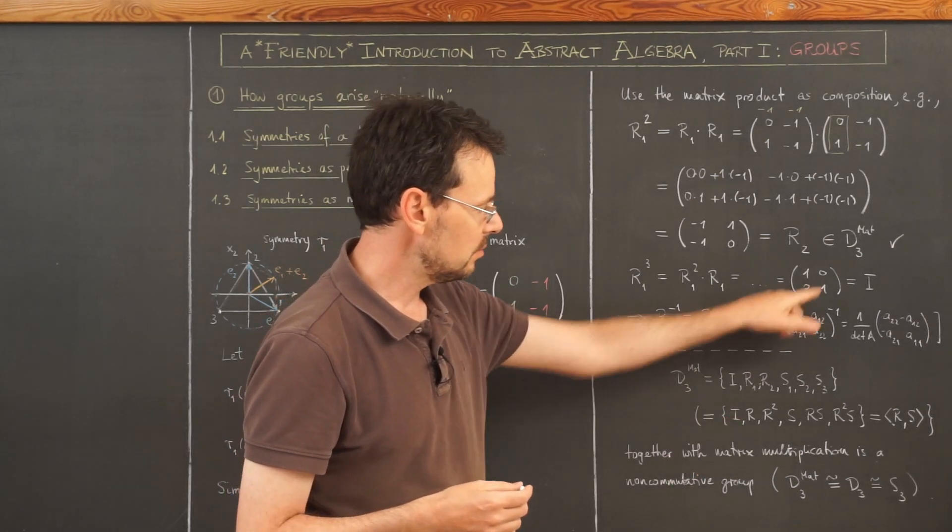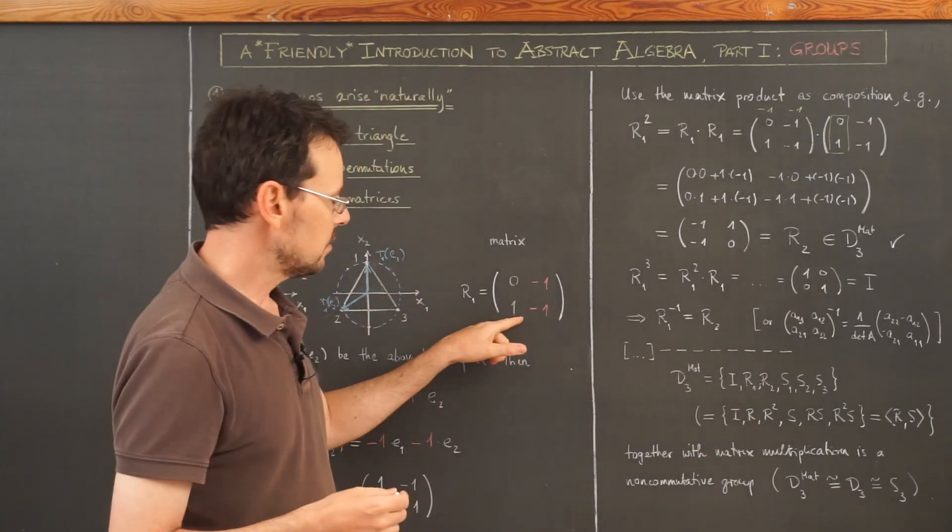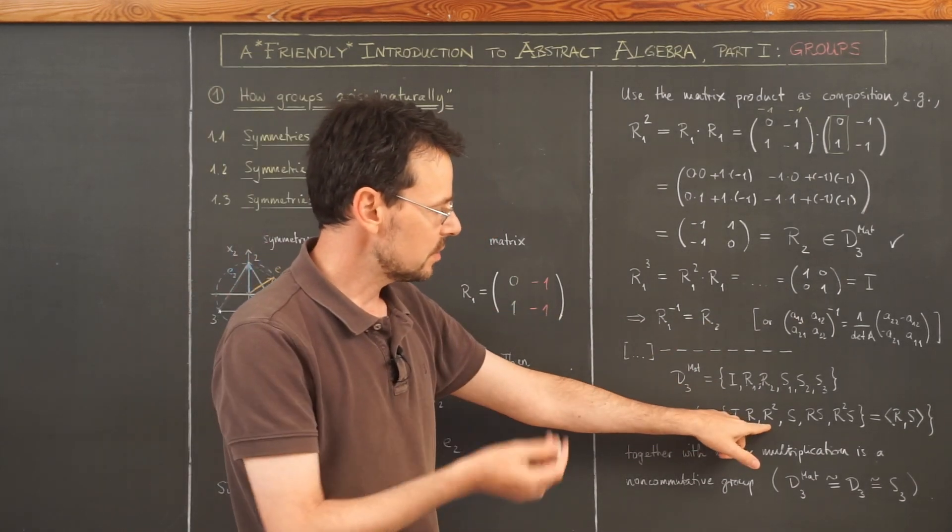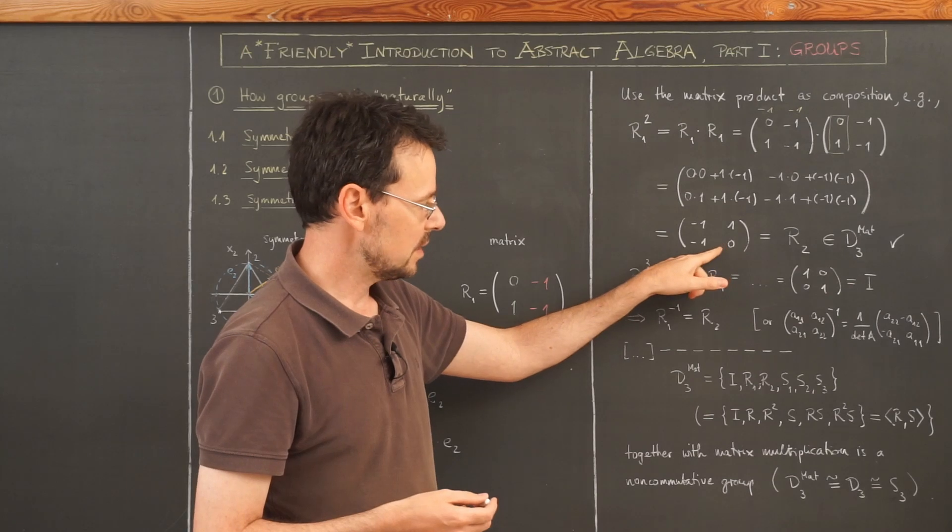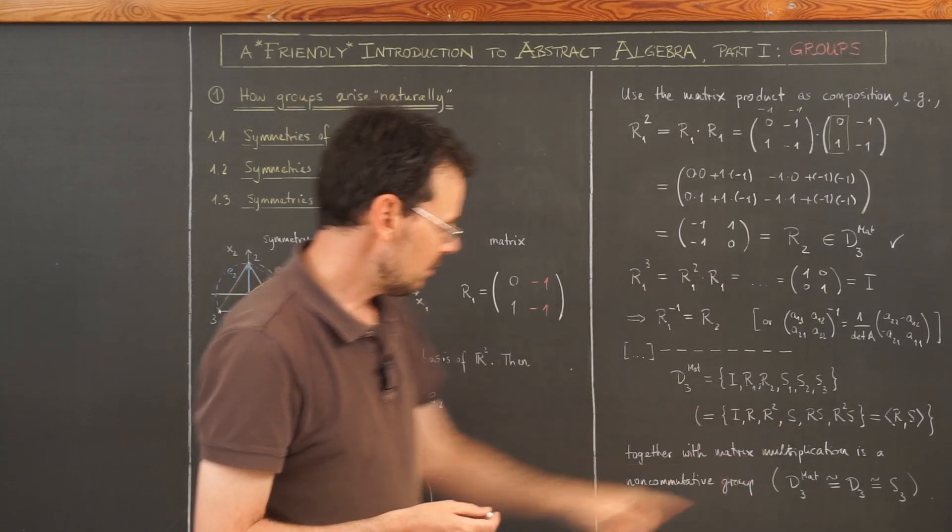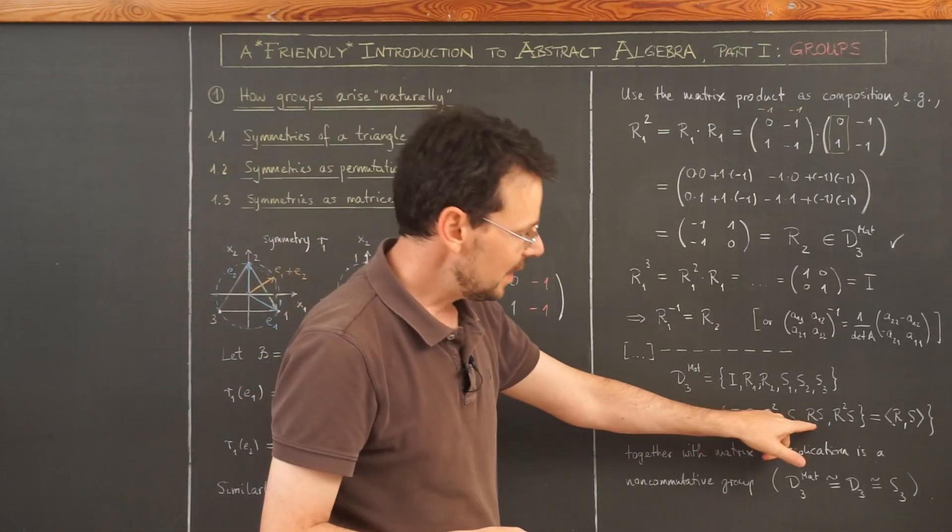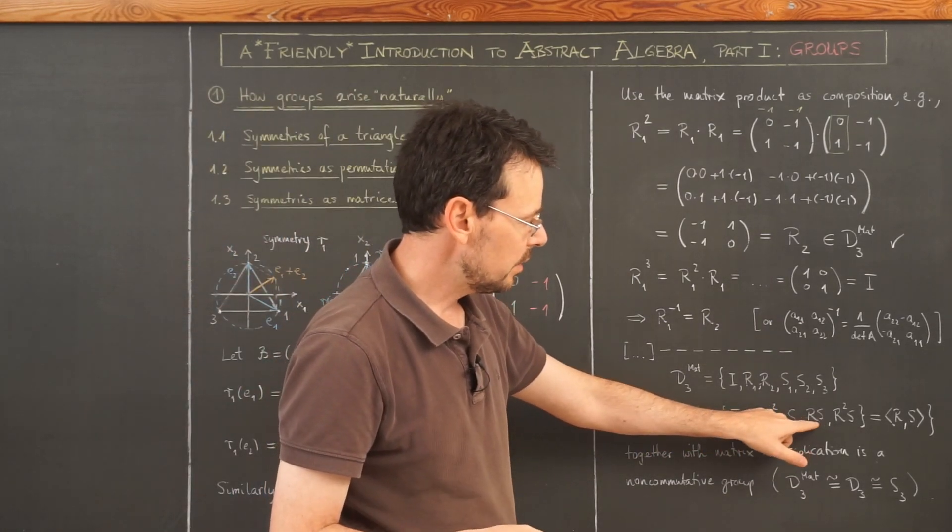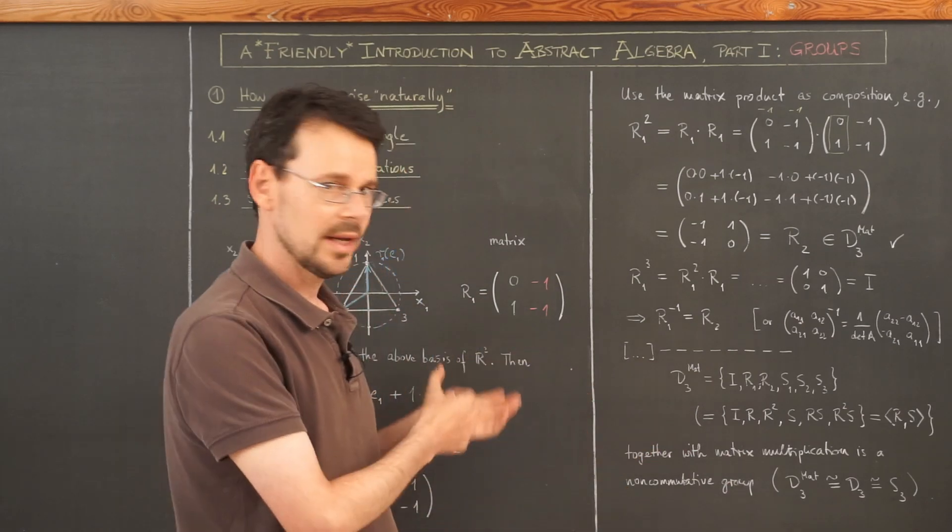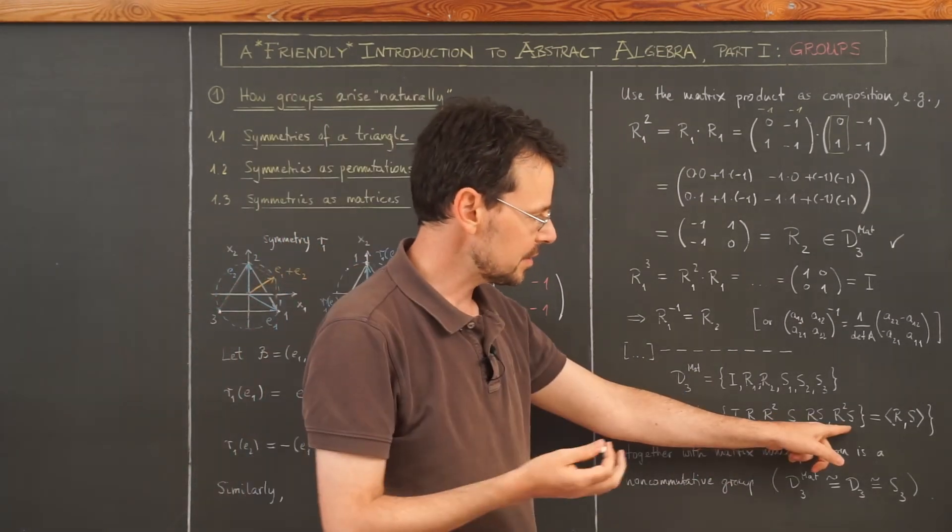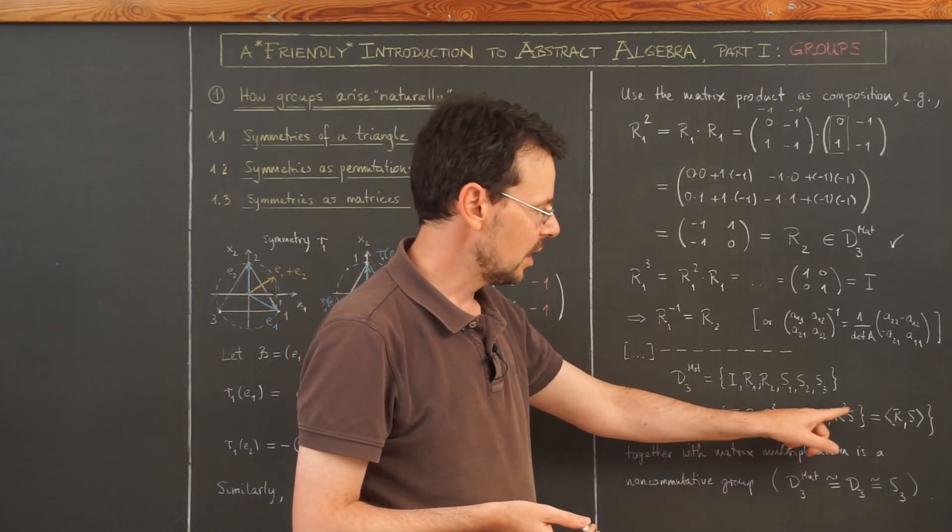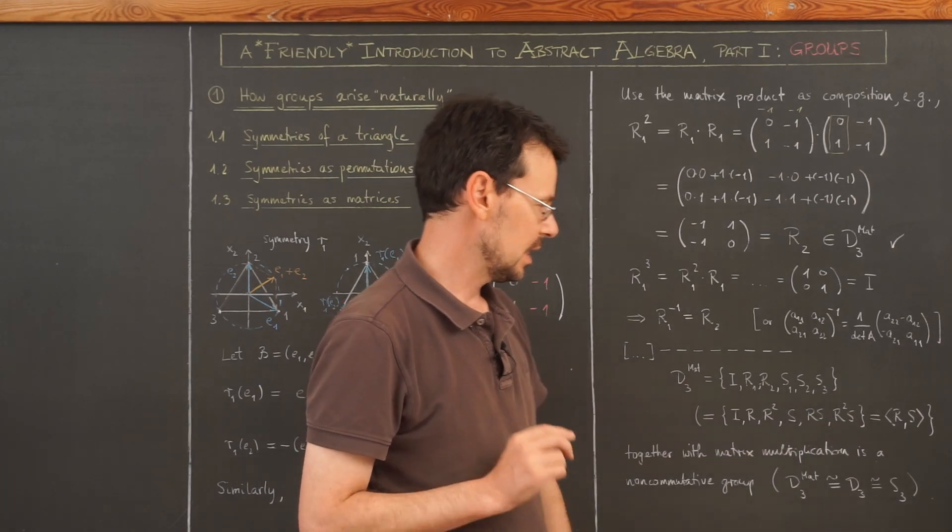So we have the identity matrix, we have this matrix, then we have the square of this matrix as we've seen here. Then we have a reflection, any reflection, you can take this if you want. Then we have the product of R with S, which gives you another reflection. And the last missing reflection is actually R squared times S.